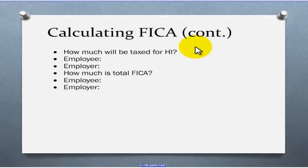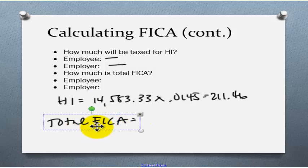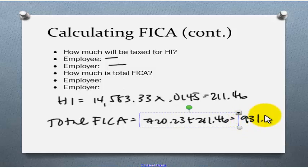How much is going to be taxed for HI? The full amount, which is the full amount of the August 1st paycheck, $14,583.33. We multiply that by 1.45% or .0145. Therefore, our tax for HI is going to be $211.46. That would be the amount for the employee and the employer. Our total FICA, we would just add our OASDI and our HI together. That would be $211.46 plus our $720.23, which gives us $931.69.